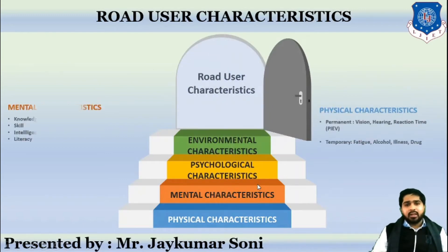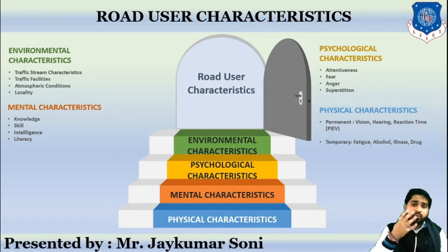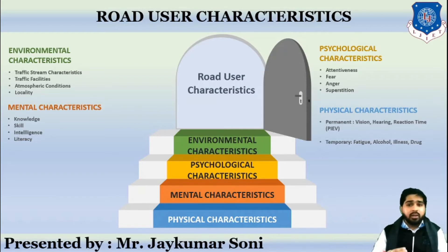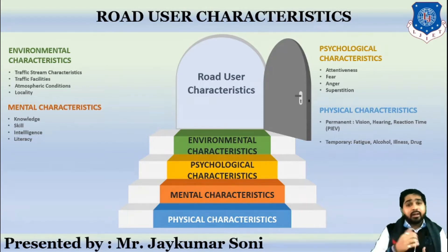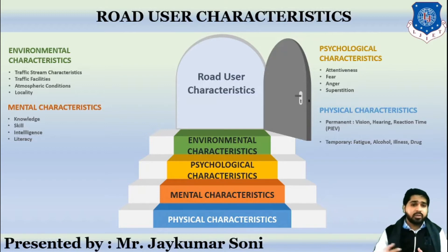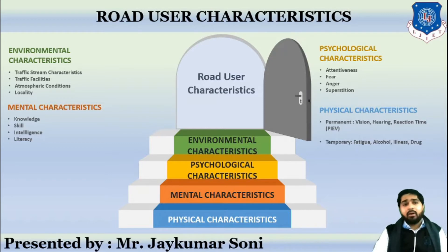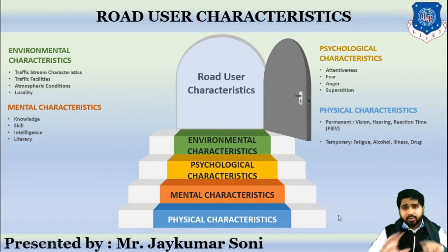Let us revise the concept once again. Road user characteristics can be divided into four parts: physical, mental, psychological, and environmental. Physical involves permanent and temporary. Permanent involves vision, hearing, reaction time, and strength. Temporary involves alcohol, fatigue, illness, and drugs. Mental characteristics involve knowledge, skill, intelligence, motivation, and literacy. Psychological characteristics involve attentiveness, fear, anger, and superstition. Environmental characteristics cover traffic stream characteristics, traffic facilities, atmospheric conditions, and locality.